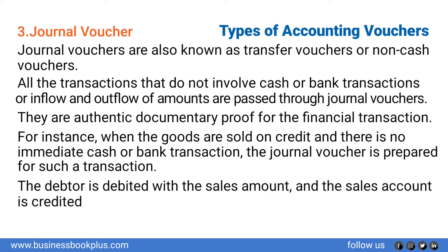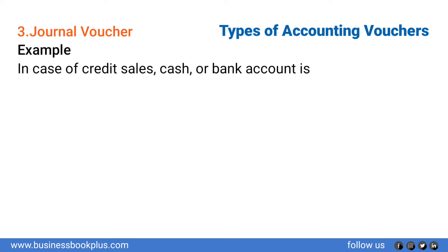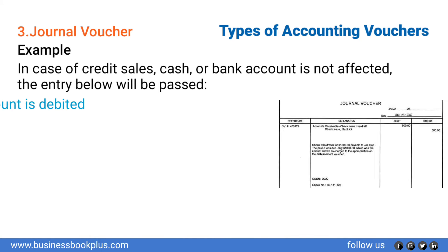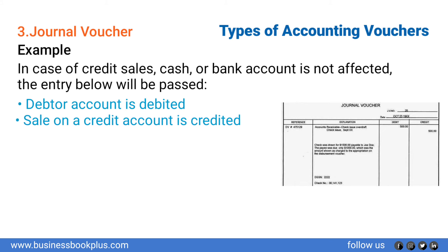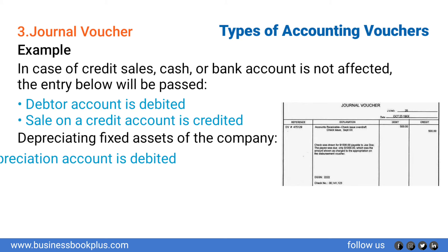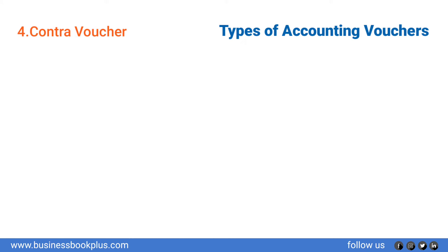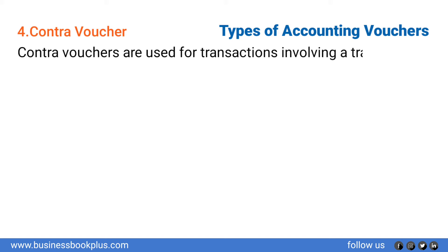In the case of credit sales, the cash or bank account is not affected. The debtor account is debited and the sales account is credited to pass the accounting entry. Similarly, in the case of depreciating fixed assets, the depreciation account is debited and the fixed asset account is credited.